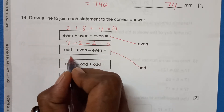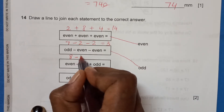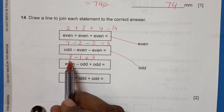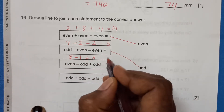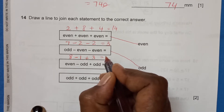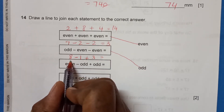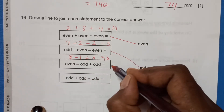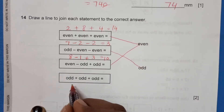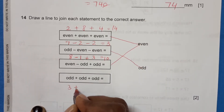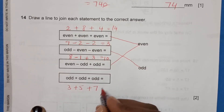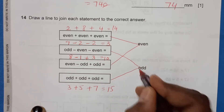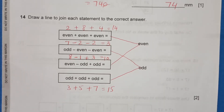For even minus odd plus odd: taking 8 minus 1 plus 3. That gives 8 minus 1 equals 7, then 7 plus 3 equals 10, which is even. For odd plus odd plus odd: taking 3 plus 5 plus 7 equals 15, which is odd. So we match those accordingly.